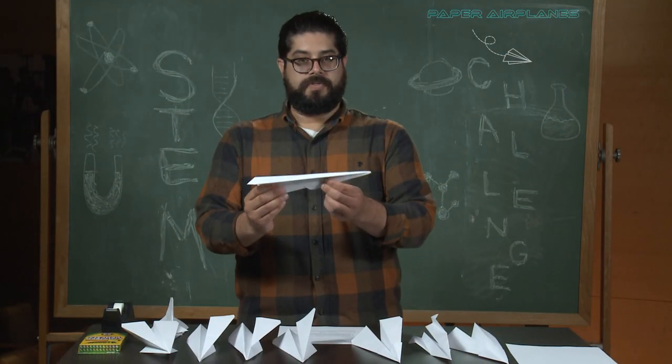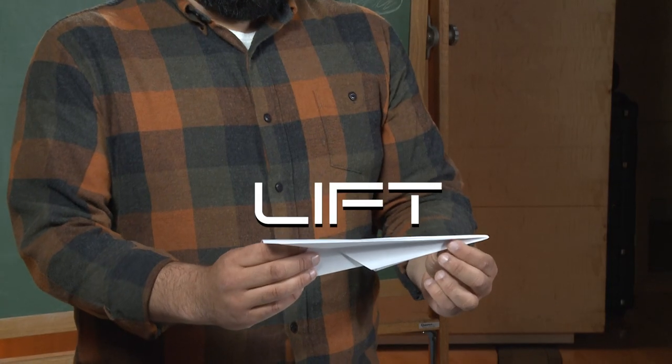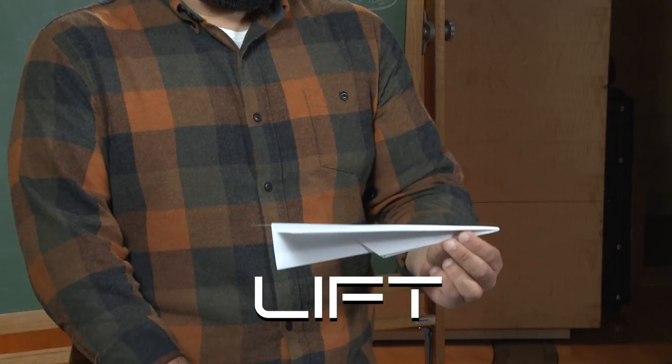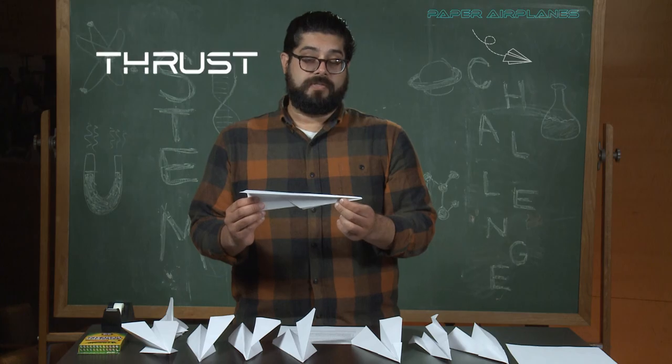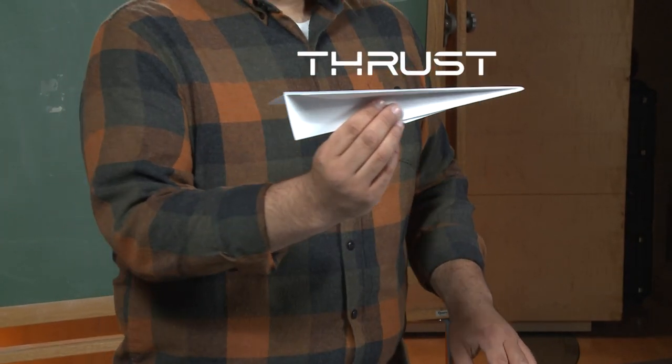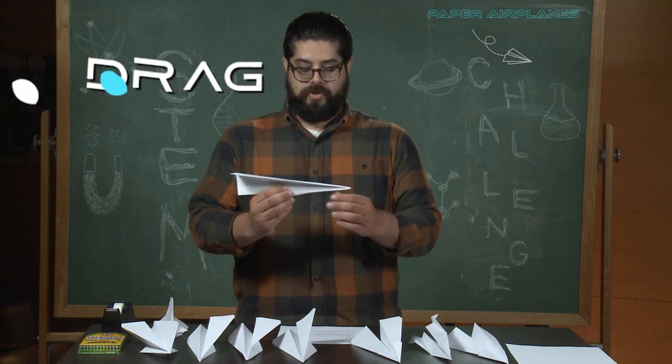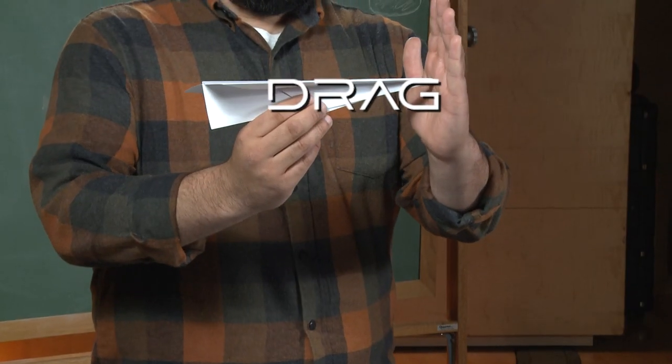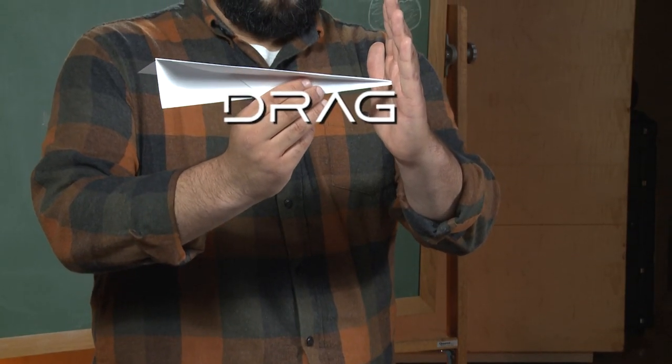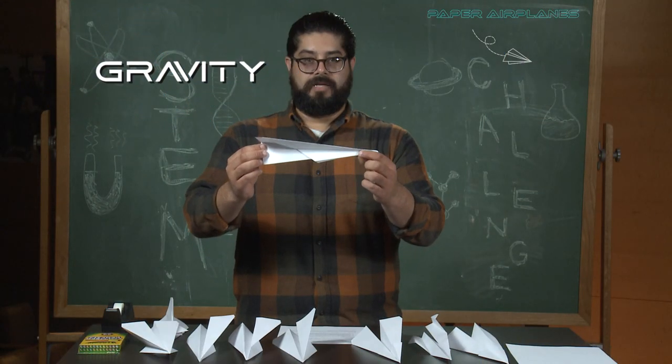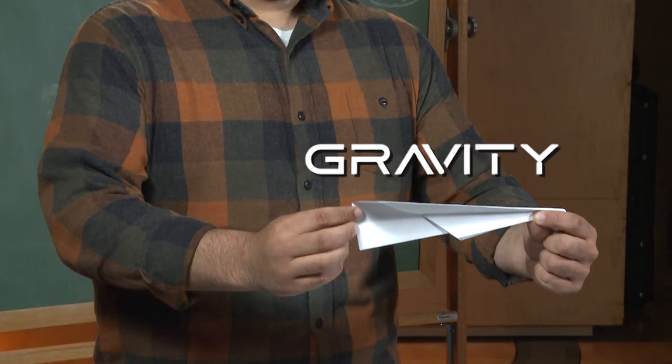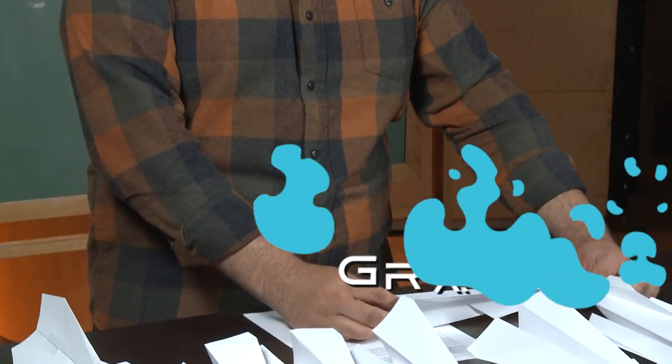One force is lift. Lift pushes air down so that the airplane rises up. Then there's thrust. Thrust is the force that propels the airplane forward. Then there's drag. Drag is a force that works opposite of thrust and it slows your airplane down. And finally there's gravity, which is the force that will ultimately bring your paper airplane to the ground.